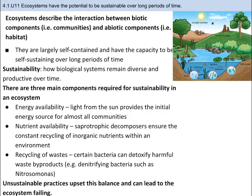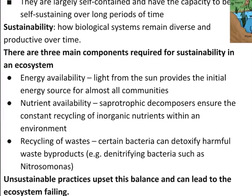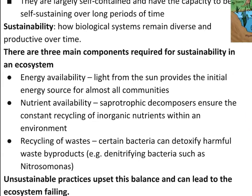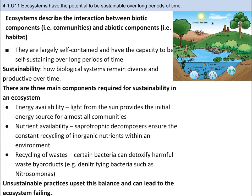This recycling enables ecosystems to be stable for a very long time, assuming that nutrients are being used sustainably. Sustainability is how biological systems remain diverse and productive over time. There are three main components required for sustainability in an ecosystem: first, energy availability — light from the sun provides the initial energy source for almost all communities; second, nutrients need to be available, with saprotrophic decomposers ensuring constant recycling of inorganic nutrients; and lastly, recycling of waste — certain bacteria can detoxify harmful waste byproducts and return nutrients to a usable state. Unsustainable practices upset this balance; for example, over-harvesting trees like deforestation removes many autotrophs and their nutrients from the ecosystem.